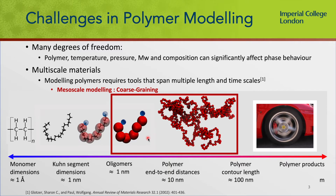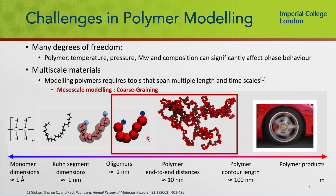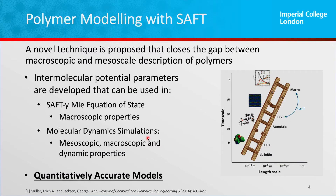One thing that we will be looking at is coarse-grained mesoscale modeling, where we could span length scales that are inaccessible to atomistic models, ranging from 1 nanometer to almost 100 nanometers. And in order to do this, we will provide a novel technique to bridge the gap between the macroscopic observables that we see in terms of polymers and the mesoscale description of them.